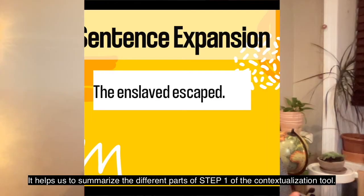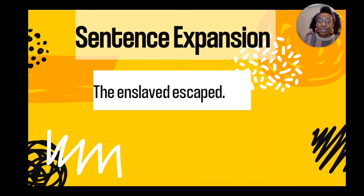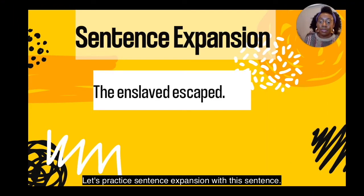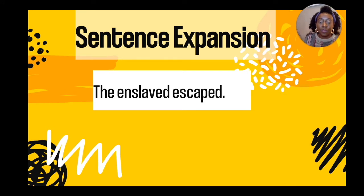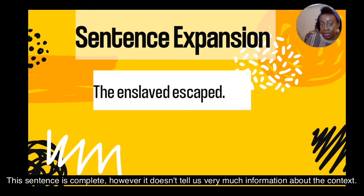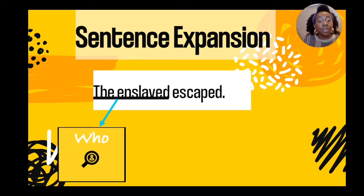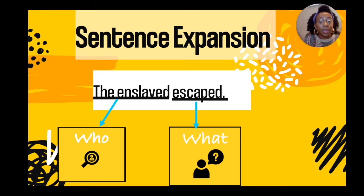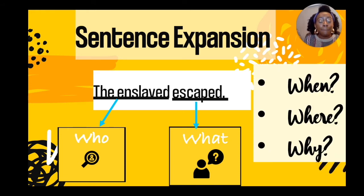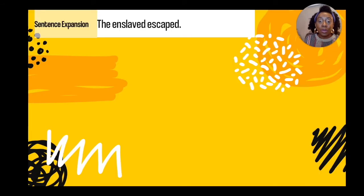So let's practice expanding this sentence: 'The enslaved escaped.' This sentence is complete, however it doesn't tell us very much information about the context. It tells us the who — the enslaved — and the what — escaped — but it doesn't answer the when, the where, and the why. So we're going to practice expanding this simple sentence.